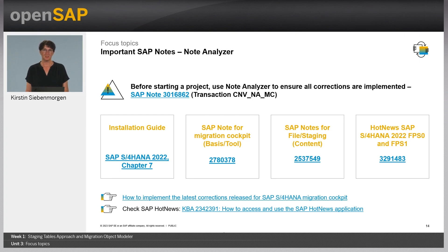I also added some additional important SAP notes. In the installation guide, you can check Chapter 7 for information on necessary roles and authorizations. The SAP note for the Migration Cockpit tool is the collective note for all releases — you can pick the relevant note for your release. There is also a composite note for file staging content topics with further information on migration objects delivered by SAP. Especially for SAP S4HANA 2022 FPS0 and FPS1, there is a hotfix available which you must check. I also added a link to a blog post on how to implement the latest corrections for the Migration Cockpit and a KBA on how to check SAP hot notes.